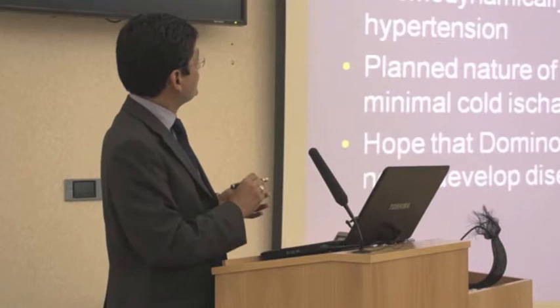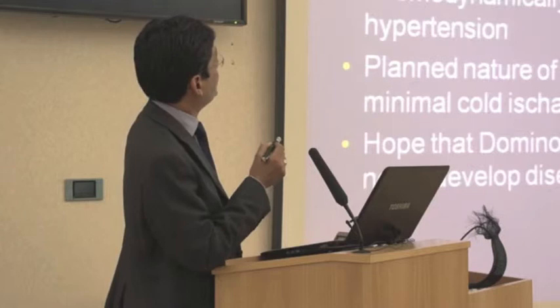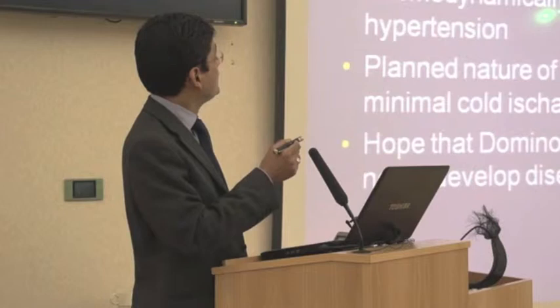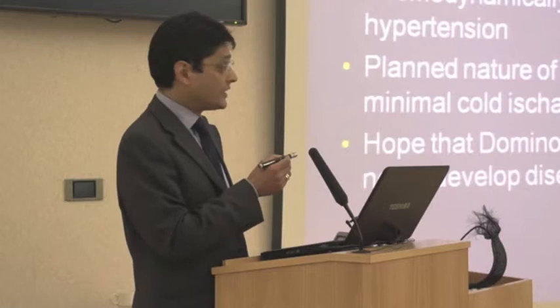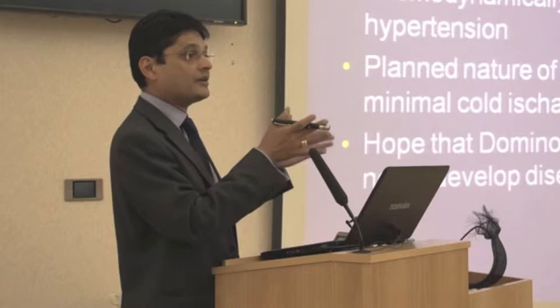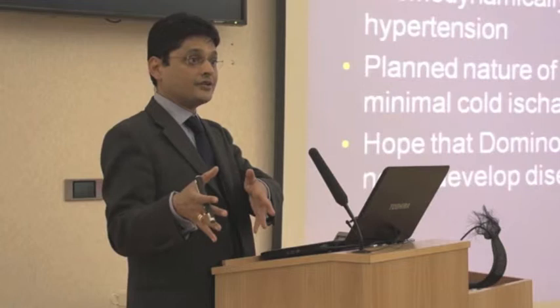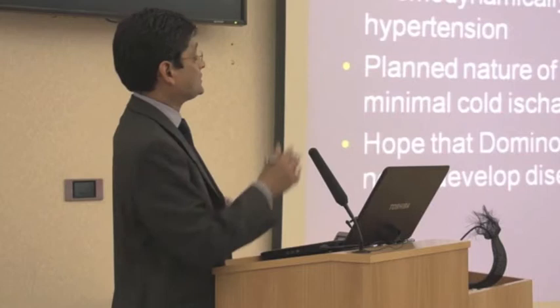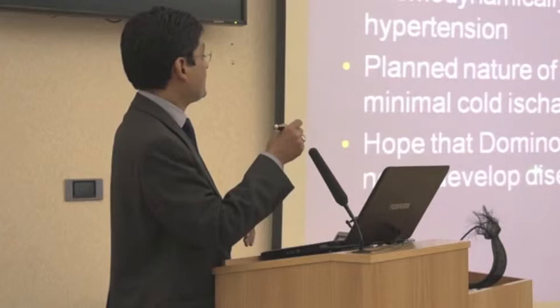The advantages are that patients with FAP who are the main domino donors are transplanted at a relatively young age — young, hemodynamically stable, and fit, without portal hypertension. This means the operation is relatively easy with low risk of complications. The planned nature of domino transplant means these livers can be harvested with minimal cold ischemia time — the time interval between removing the liver from one patient and transplanting it into another — which is one of the most important determinants of outcomes. There is also the hope that domino liver recipients may never develop the disease, as it takes decades to develop symptomatic disease.